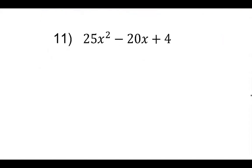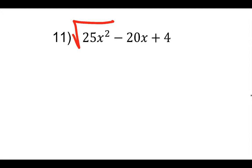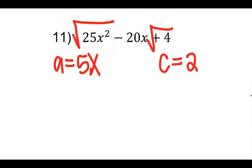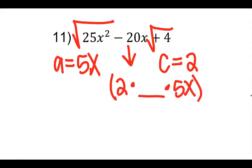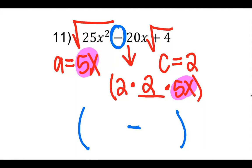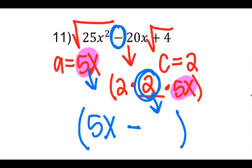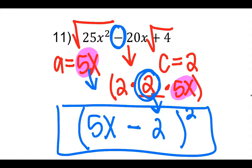Same thing with number 11. Take the square root: square root of 25 is 5, square root of x squared is x, so a equals 5x. Square root of 4 is 2 for the c term. Then 5 times 2 is 10, and 20 divided by 10 is 2. I know it's subtraction because of that subtraction sign. So the answer is 5x minus 2 squared.